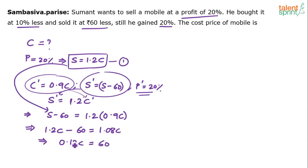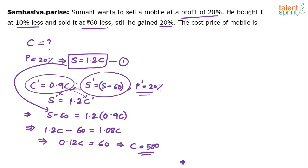When you simplify: 60 divided by 12 is 5, so 60 divided by 0.12 is 500. Therefore the cost price C is equal to 500 rupees. Cost price has to be 500 rupees.